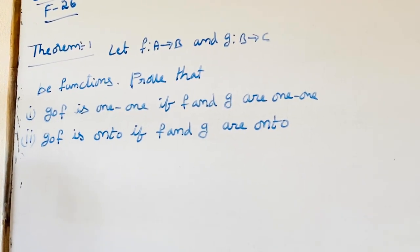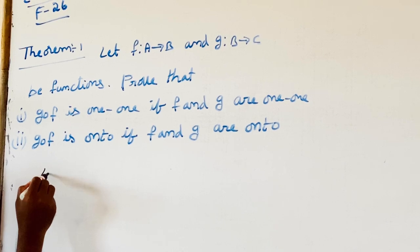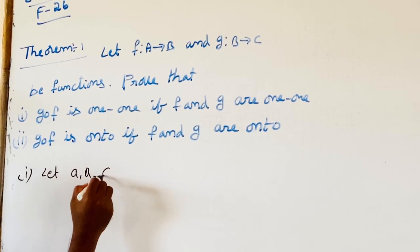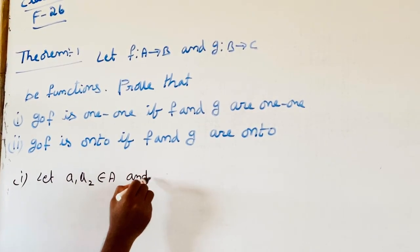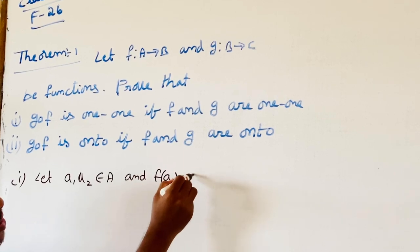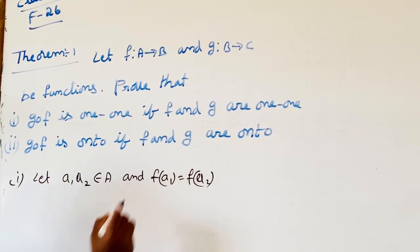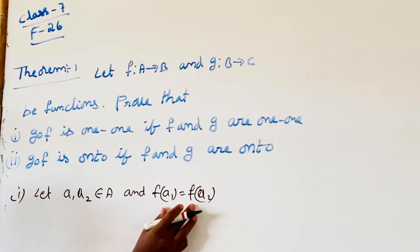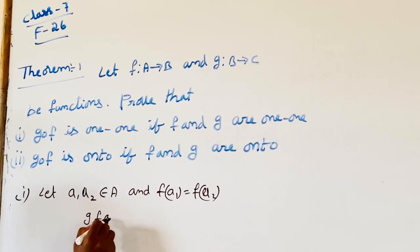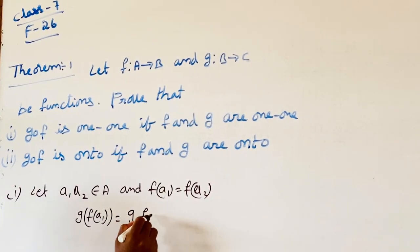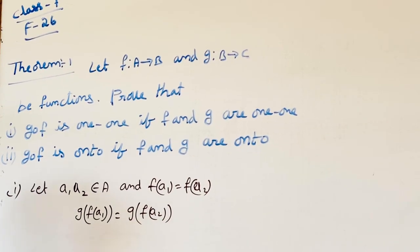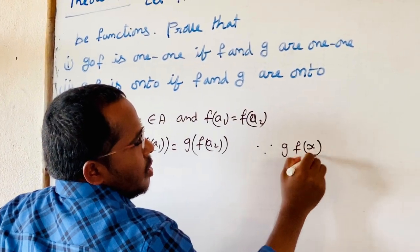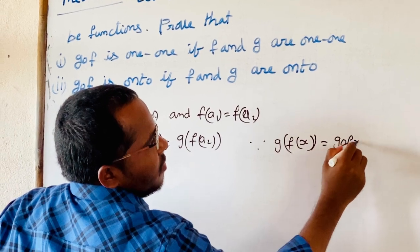Let us see. For part one — 1-1: Let A1, A2 belong to A and F(A1) equals F(A2). This is the 1-1 function condition. Then apply G on both sides: G(F(A1)) equals G(F(A2)). We know that G(F(x)) equals G∘F(x).